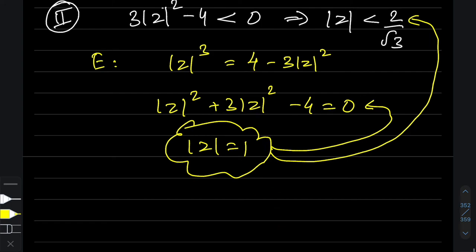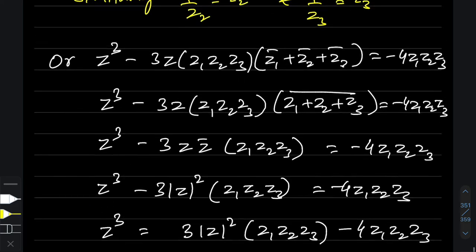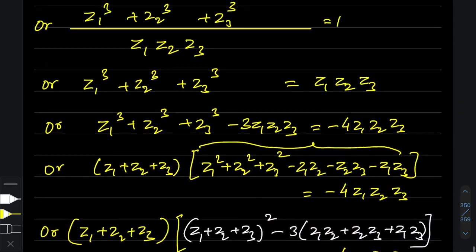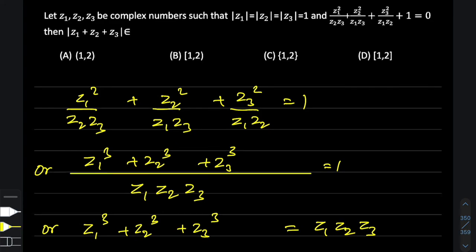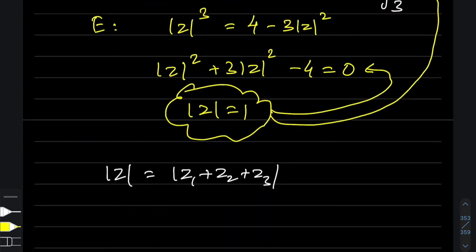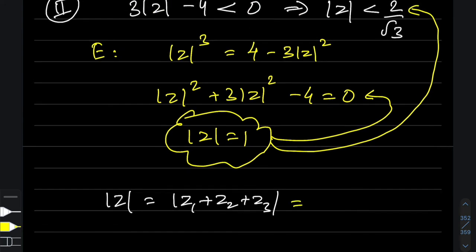So the possible values of |z1 + z2 + z3| are only 1 and 2. Going back to the question, the answer is not an interval but a set containing only two values: {1, 2}. A complex number question can indeed become complicated at times — this is a potential question for your JEE Main and Advanced exams. Thank you so much for watching, be safe and stay healthy.